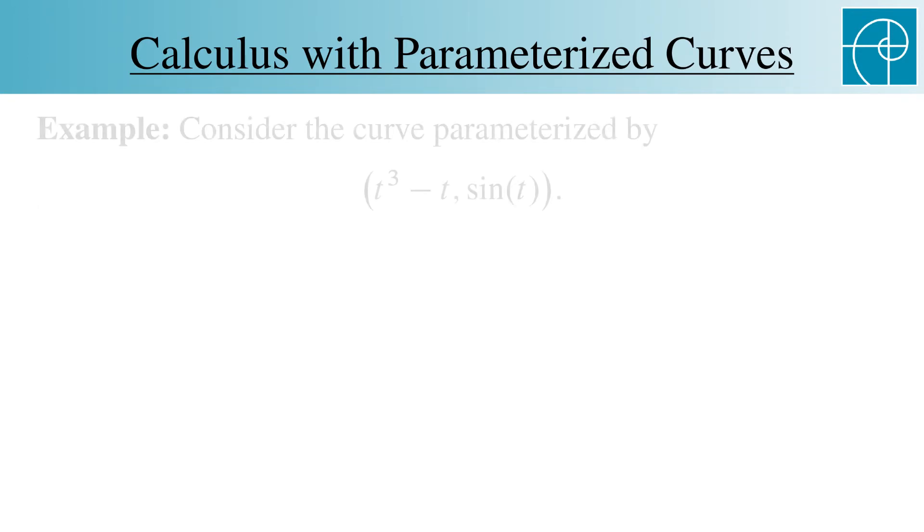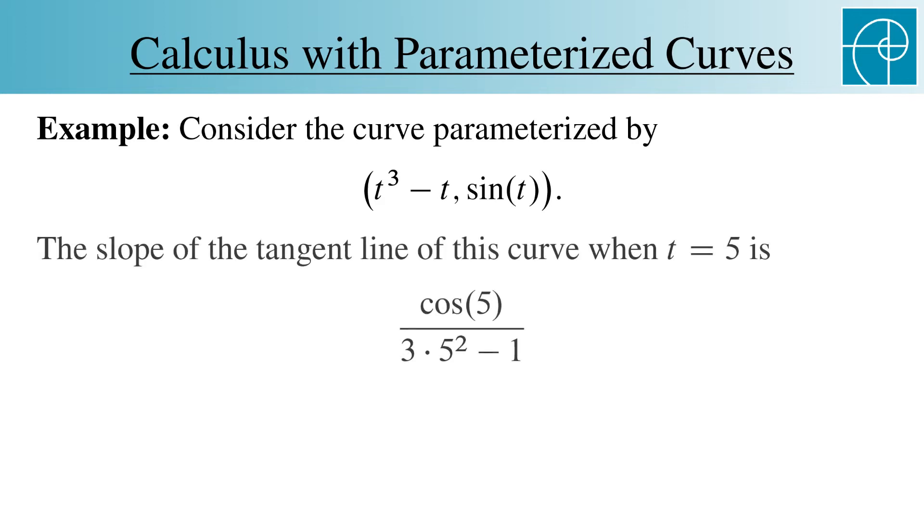As an example, consider the curve parameterized by t cubed minus t and sine of t. The slope of the tangent line of this curve, when t equals 5, is cosine of 5 over 3 times 5 squared minus 1.